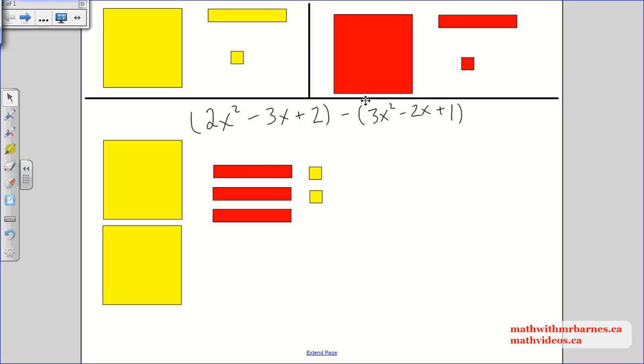Now I look at the like terms, so this is 2x squared, I'm going to subtract away 3x squared. Now I only have 2x squareds here, so how am I going to subtract 3x squared from 2x squared? I can't, unless I have 3x squared. So what I'm going to have to do is I'm going to have to bring another one of these down.